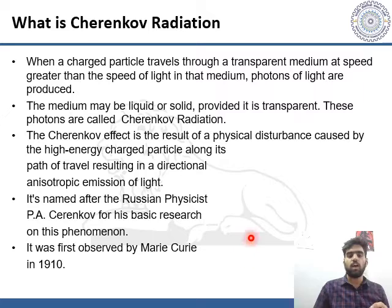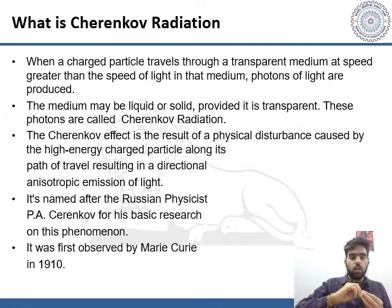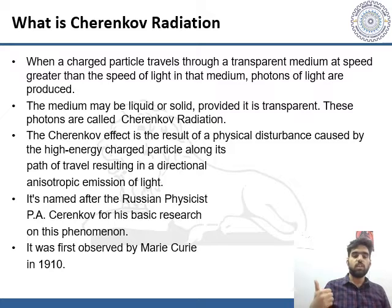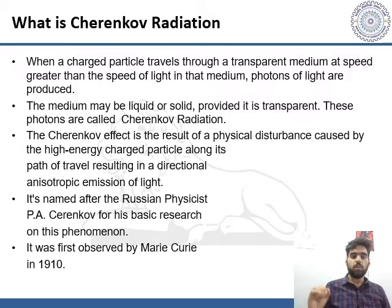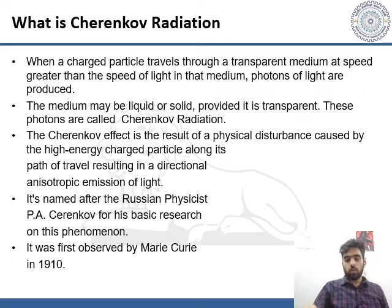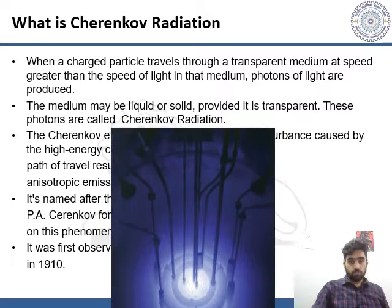The Cherenkov radiation effect is the result of a physical disturbance caused by the high-energy particle along its path of travel, resulting in a directional, anisotropic emission of light. It is named after the Russian physicist P.A. Cherenkov for his basic research on this phenomenon. It was first discovered by Marie Curie in 1910.